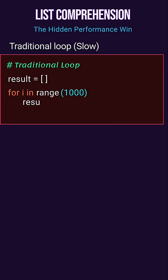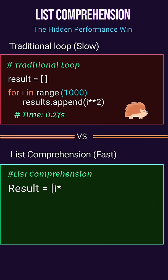List comprehensions aren't just cleaner code, they're actually faster. Here's why most developers don't understand the performance difference.